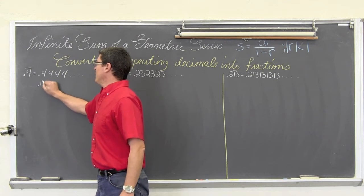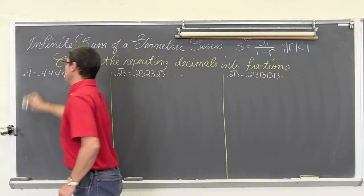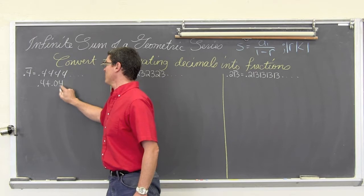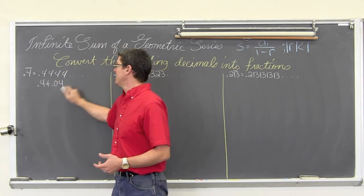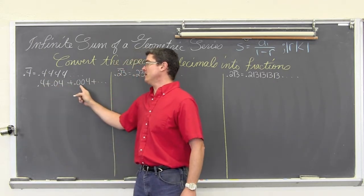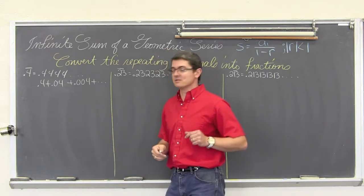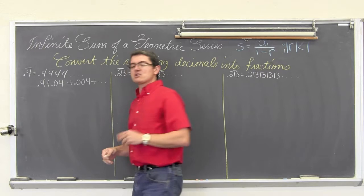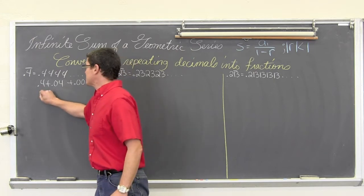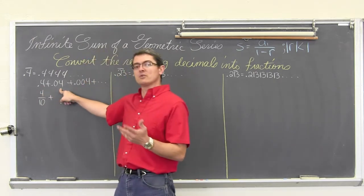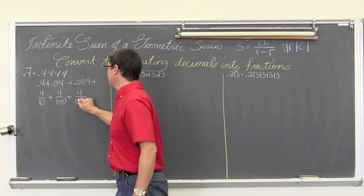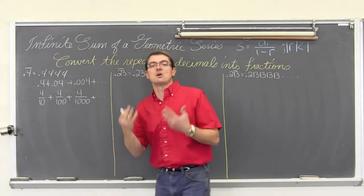I am going to take this repeating decimal and expand it. So the first place is .4, plus .04 — that is for the second 4 in the hundredths place — plus .004 and so on. I am taking this repeating decimal and expanding it into a long series of additions. Now I am going to write each of these in fraction form to build in that idea that this is a geometric series. So this is the tenths place: 4 tenths, plus 4 one-hundredths, plus 4 over a thousand, and so on.